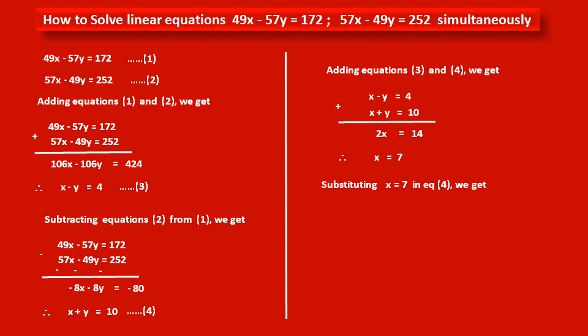Substituting x = 7 into equation 4, we get: 7 + y = 10. Subtracting 7 from both sides, y = 10 - 7 = 3. So the values of variables x and y are 7 and 3 respectively. This is the solution of the given linear equations.